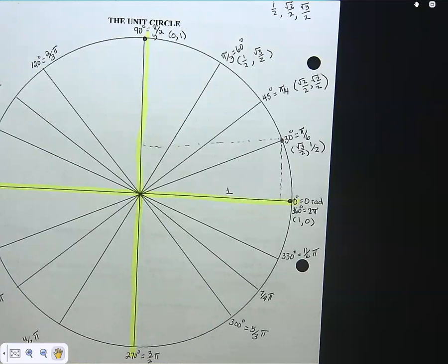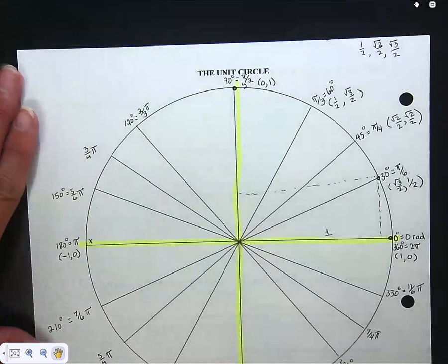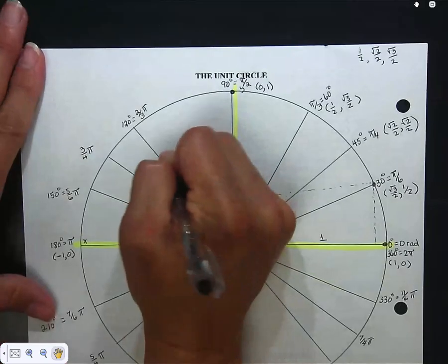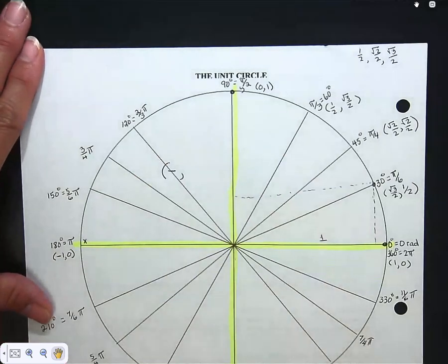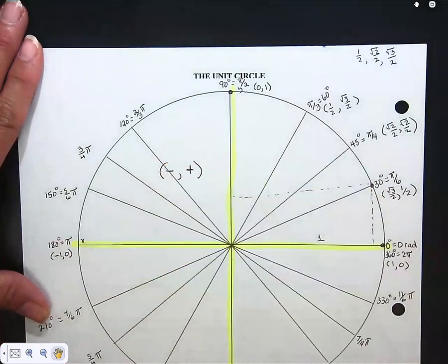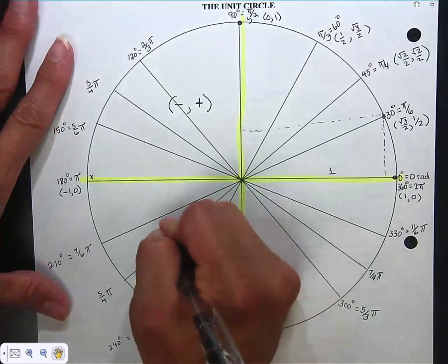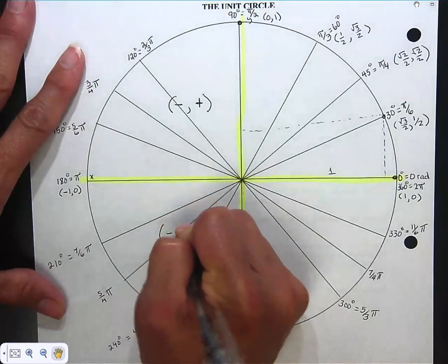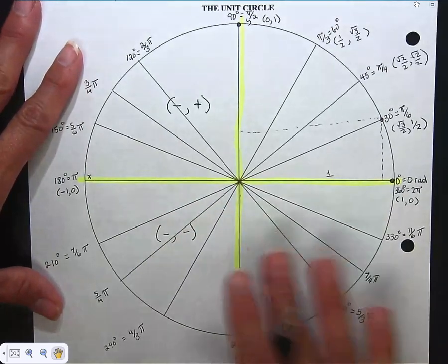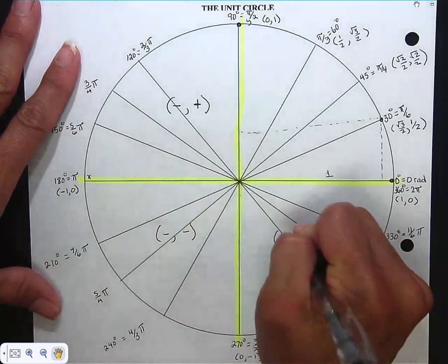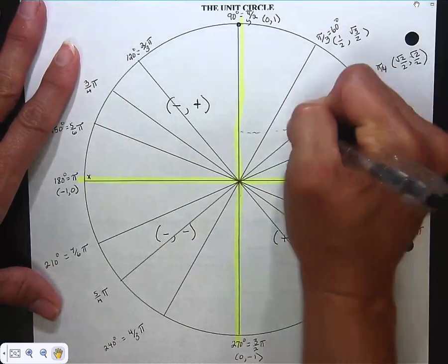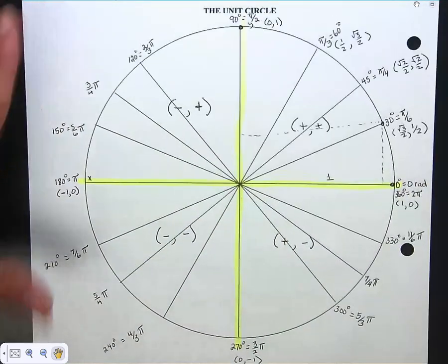Once you have the first quadrant labeled, you can go around the whole unit circle and label all the other points — the coordinates are the same magnitude, you just need to apply the proper sign. In the second quadrant, x is negative and y is positive. In the third quadrant, both x and y are negative. In the fourth quadrant, x is positive and y is negative. In the first quadrant, both are positive.